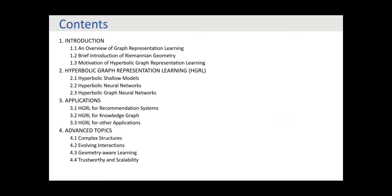In this tutorial, we attempt to provide a systematic review of methods, applications, and challenges in this fast-growing area. We will introduce graph neural networks and some preliminaries on Riemannian manifolds and hyperbolic geometry concepts. We will revisit technical details of developed hyperbolic graph neural networks, unifying them into a general framework and summarizing components and variants. We will also highlight applications in various fields and discuss potential solutions to address current challenges, including our initial attempts.